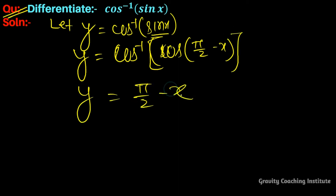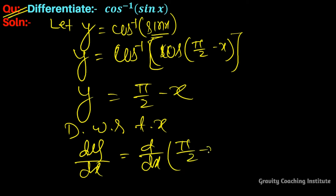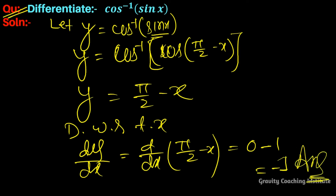Differentiating with respect to x: dy/dx = differentiation of (π/2 - x). Since π/2 is a constant, its derivative is 0, and the derivative of x is 1, so dy/dx = -1. This is our required answer.